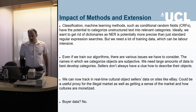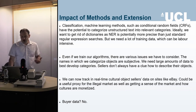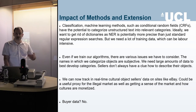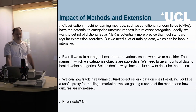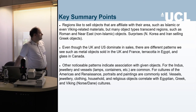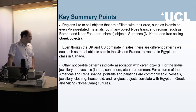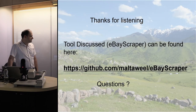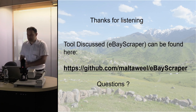In terms of methods, classification and machine learning techniques help make sense of these larger datasets. We can now track this information in real time to know what's happening on eBay as it changes. We begin to understand which regions sell objects and how they consume cultural objects. Noticeable patterns indicate what objects are in high demand. The tool has been released and is continuously being updated.